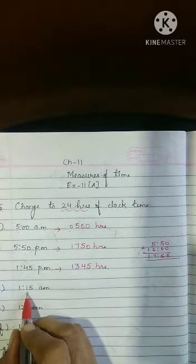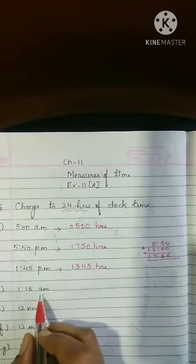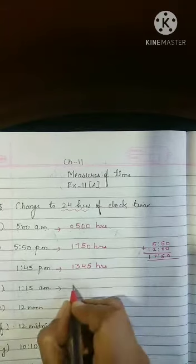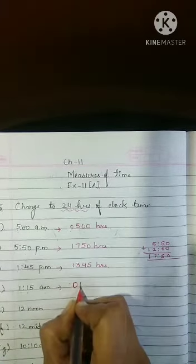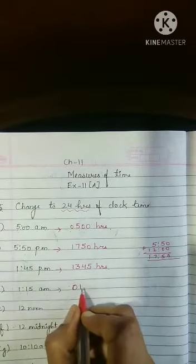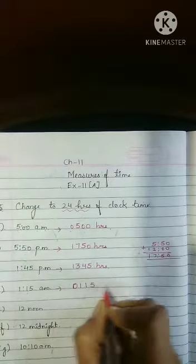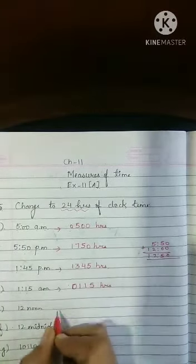This is 1:15 am. Am means at night. So am always remember we don't change am. Only we change pm. So it will come as it is. 1 will not come directly, 0 1. 0 1 and 15 will come, 01:15 hours.